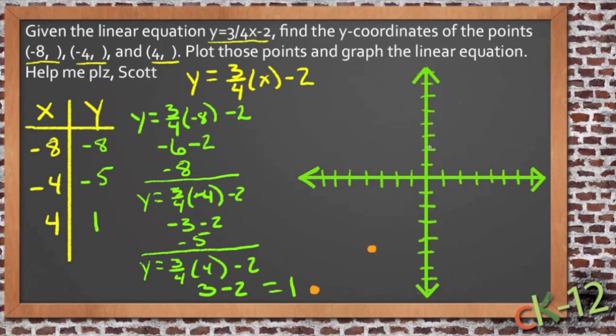And then finally we have one at 4, 1. So 1, 2, 3, 4, 1. So about right there.